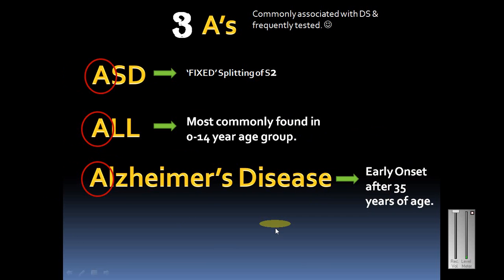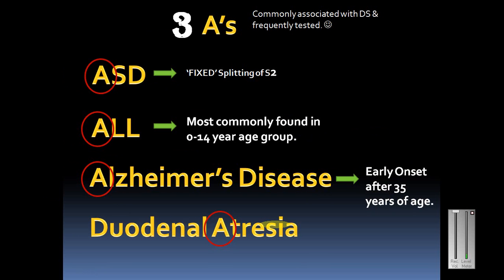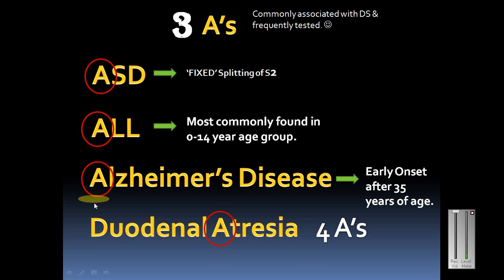There is actually a fourth A as well, though I've never seen it in any vignette: duodenal atresia. It starts with D but is in the tree of the duodenum, helping make a good mnemonic. So remember all four A's of Down syndrome: ASD (most common congenital heart anomaly), ALL (increased risk), early-onset Alzheimer's disease, and duodenal atresia.